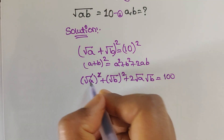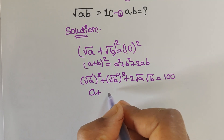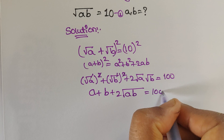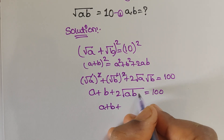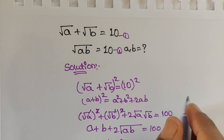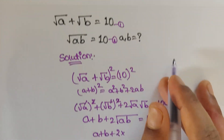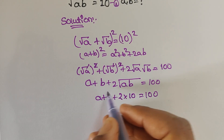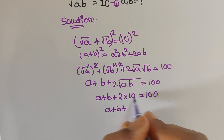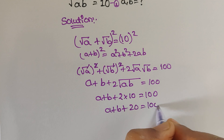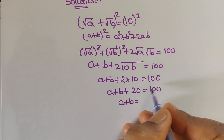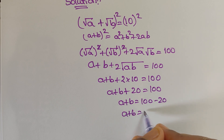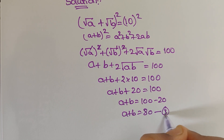The square root and square cancel, giving a plus b plus 2 times square root of ab equals 100. We know that square root of ab equals 10, so substituting: a plus b plus 2 times 10 equals 100, meaning a plus b plus 20 equals 100, so a plus b equals 80. Let us call this equation 3.